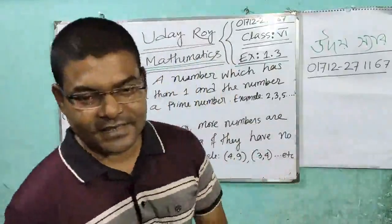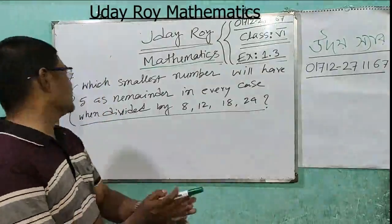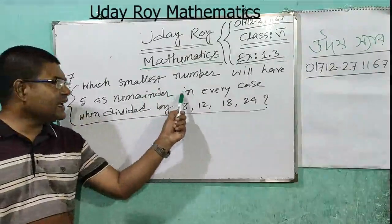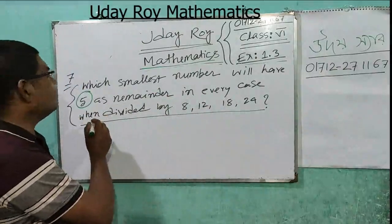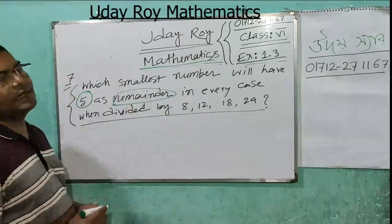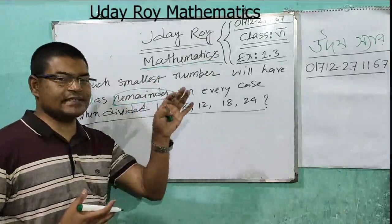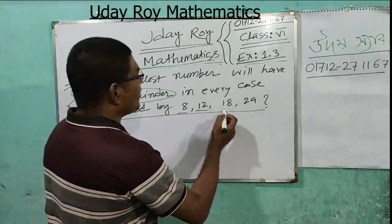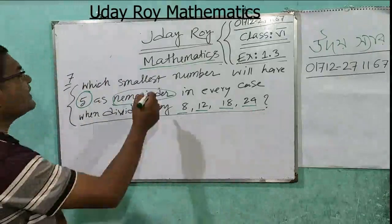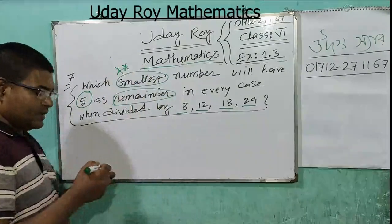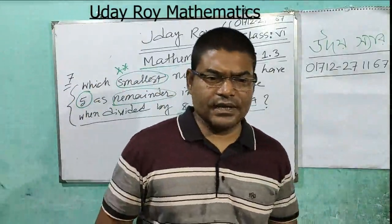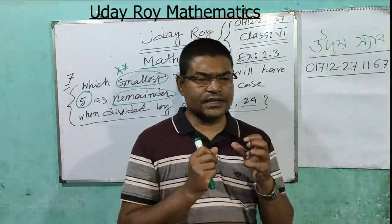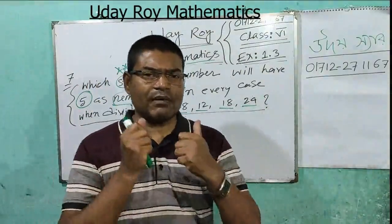Welcome to our new class, Class 6. This is number 7 — an important maths problem. Which smallest number will have 5 as remainder in every case? 5 is the remainder in every case. When divided by 8, 12, 18, and 24, find the smallest number. If you see the word 'smallest' or 'lowest', you have to find out the LCM first.